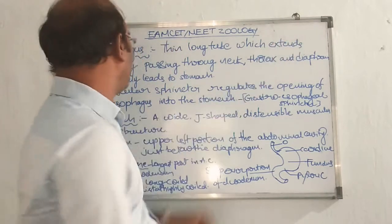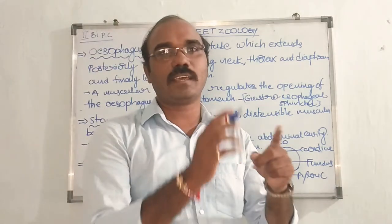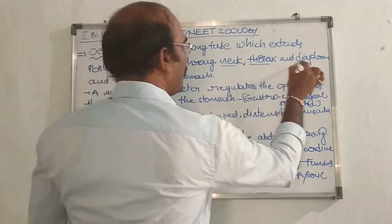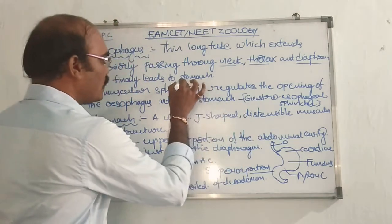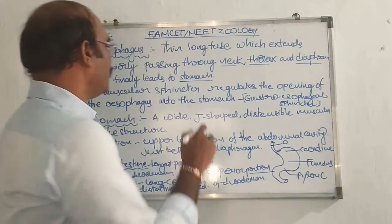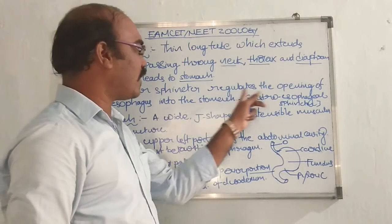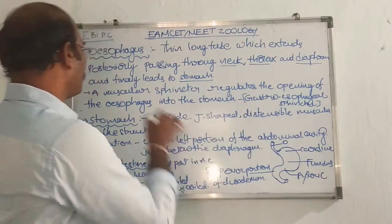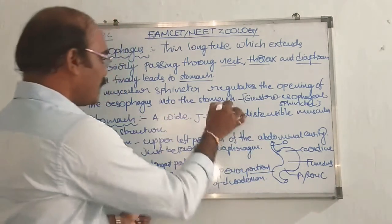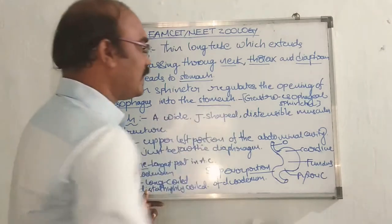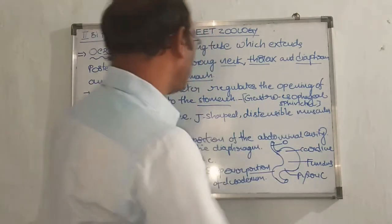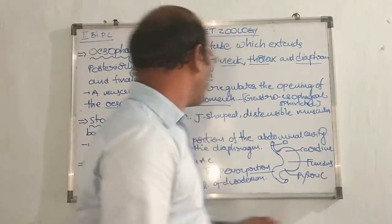The esophagus is a thin long tube which extends posteriorly, passing through the neck, thorax, and diaphragm. When the esophagus finally leads into the stomach, a muscular sphincter regulates the opening of the esophagus into the stomach. That is called the gastroesophageal sphincter.